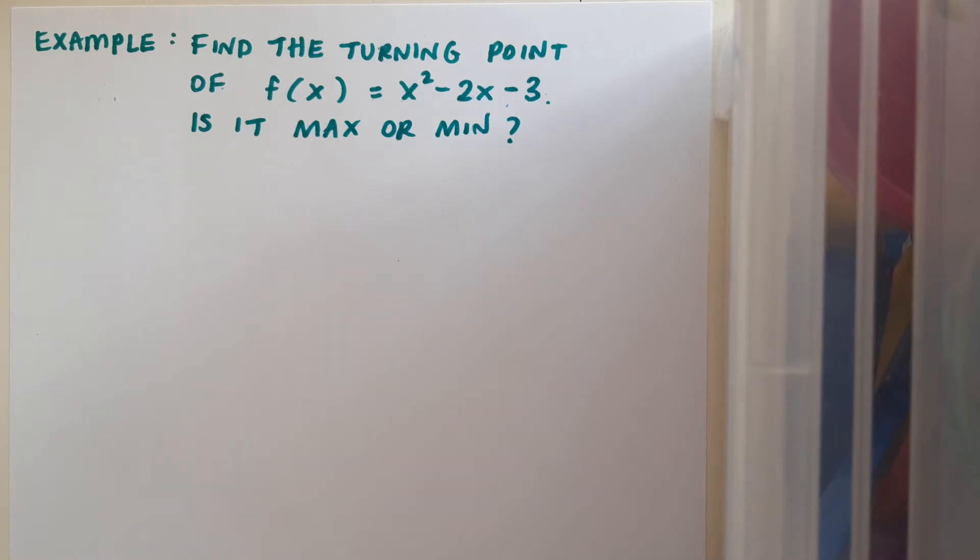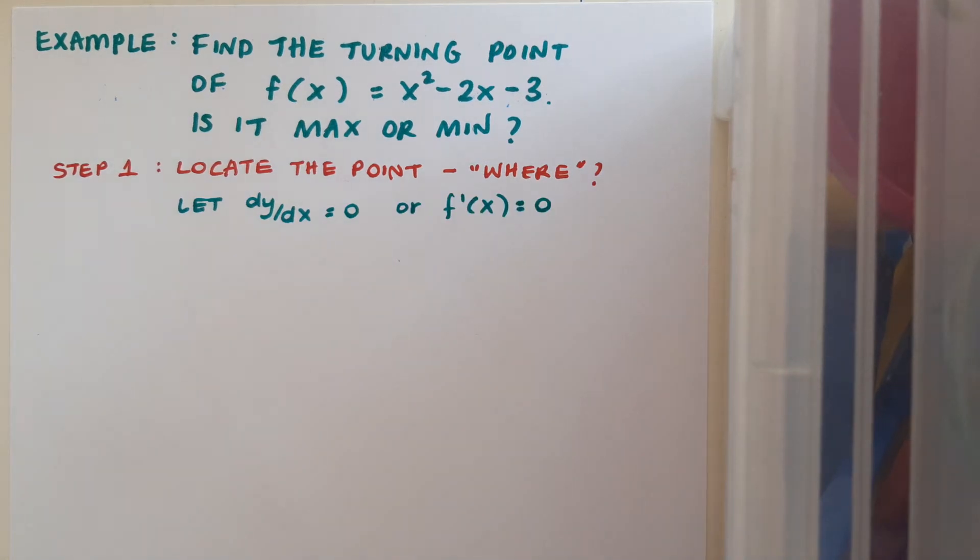So here's an example of how to go about a question like this. Find the turning point of f(x) = x² - 2x - 3, and then figure out is it a max point or is it a min point? Step one is going to be to locate the point, find out where the point is. And to do this, like we said a moment ago, we let dy/dx equal to zero. Now in this case, I won't call it dy/dx. What might I be calling it instead? In this case, I'm going to call it f'(x). If you're uncertain about this, go back and watch the notation video to clarify.